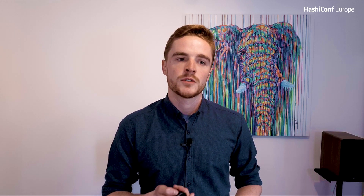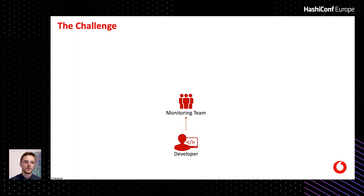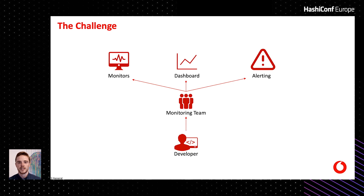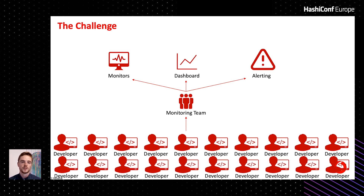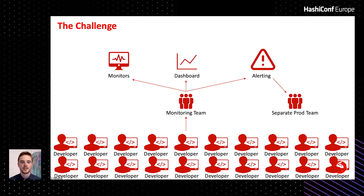I wanted to start by talking about the challenge we had. In 2018, when we started insourcing and growing our developer headcount, we had a centralized monitoring team looking after monitors, dashboards, and alerting. This was fine to start with, but as we grew and added more developers, that team became a bottleneck — we'd have to wait for monitoring and alerting to be provisioned before our projects could go live. We also had a separate production team taking those alerts, which conflicted with our DevOps goal of developers owning their code end to end.